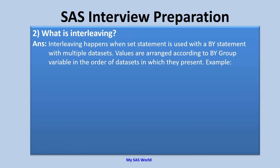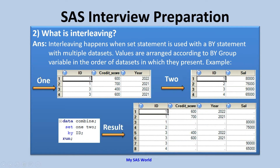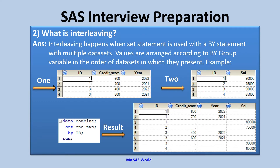Interleaving only happens when we use a by statement with the set statement. The condition to use the by statement is that datasets should be sorted. Let's understand this with an example. Here we have two datasets: dataset 1 has three variables and four observations, and dataset 2 has two variables and four observations. The common variable is id.